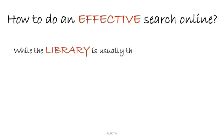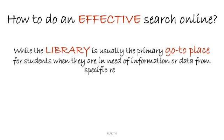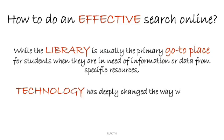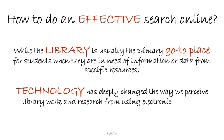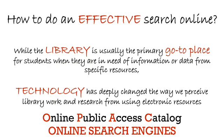While the library is usually the primary go-to place for students when they are in need of information or data from specific resources, technology has deeply changed the way we perceive library work and research — from using electronic resources like online public access catalog to accessing a wide array of online libraries from all over the world through the mechanism of online search engines.